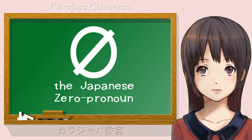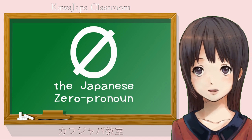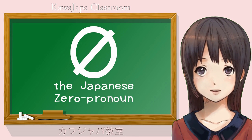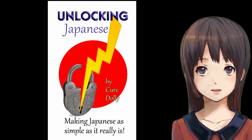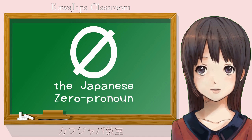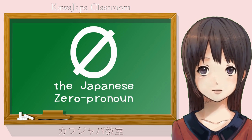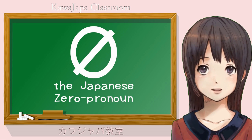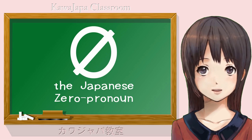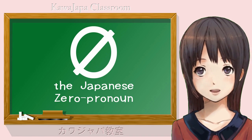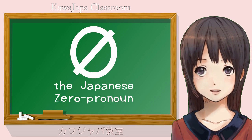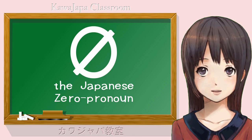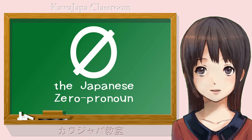Here it is. This is the symbol for the Japanese zero pronoun. I thought I had invented the use of this symbol in my book Unlocking Japanese, but later, researching the subject further, I found that some academic researchers also use this same symbol for the zero pronoun. You probably have not heard about the zero pronoun because it is not taught in ordinary textbooks and schools. But if you Google 'Japanese zero pronoun,' you will find a lot of material about it, all of it tucked away in academic papers and PhD theses.